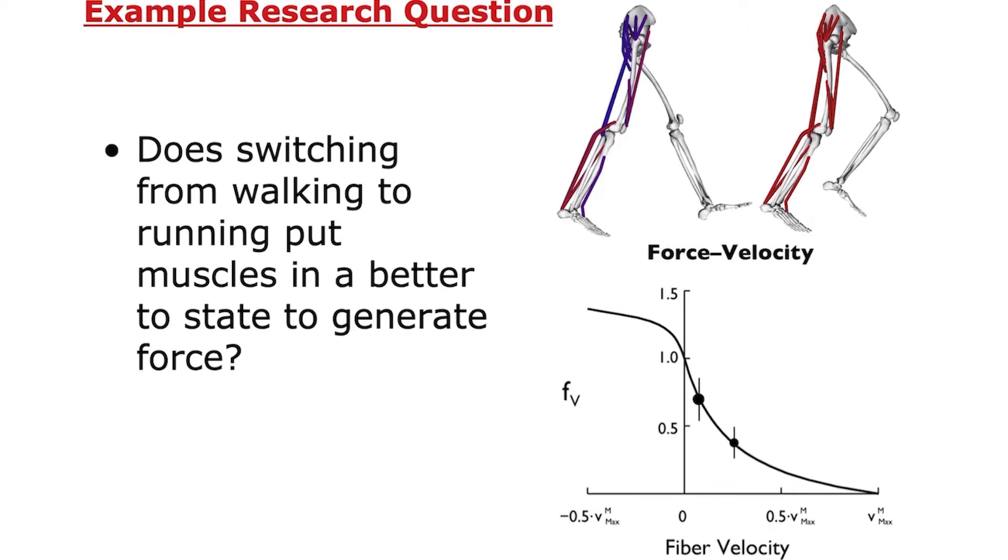If I'm switching my gait, making a gait transition from walking here to running here, would it change how the muscle is operating? For example, here's a force velocity relationship. If walking is here, and running is here.